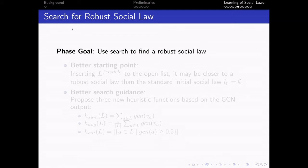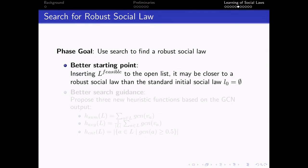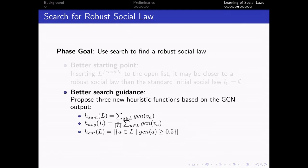And the final phase is search for a robust social law. Now, we propose to do a better starting point to the search and insert the feasible social law, the predicted feasible social law to the open list. And then guide the search using the output of the GCN model. Again, details in the paper.